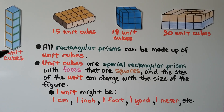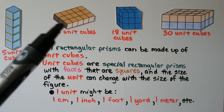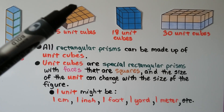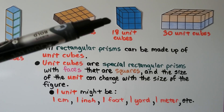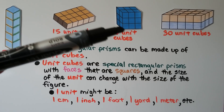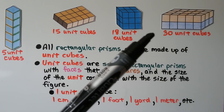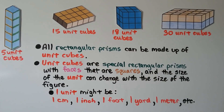For example, this could be five inches — each unit could be one inch by one inch by one inch, giving us five one-inch cubes. Each of these cubes could be one centimeter, making fifteen centimeter cubes. Here we have eighteen cubes — six on top, six in the middle, and six on the bottom; six times three is eighteen. This one is thirty unit cubes — fifteen cubes on top and fifteen below, equaling thirty.